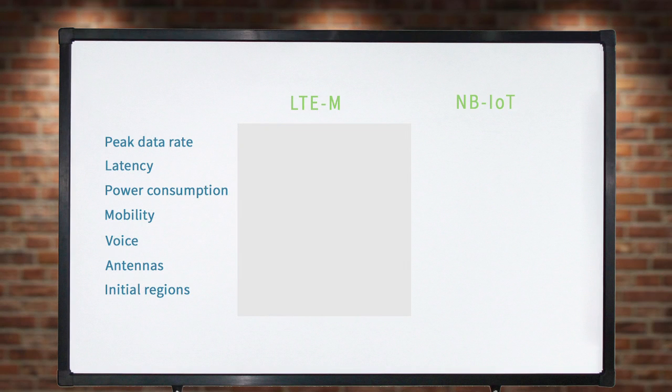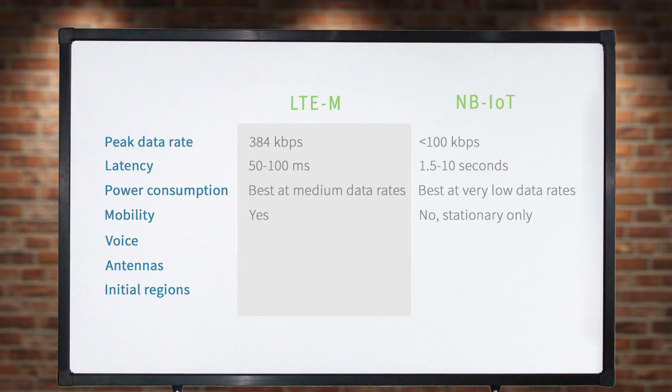Let's take a look at the details. LTE-M has higher throughput with lower latency, and battery use is optimized accordingly. It works on the go, so it's appropriate for applications in transportation and supply chain tracking. It can also carry voice for applications such as residential security systems.